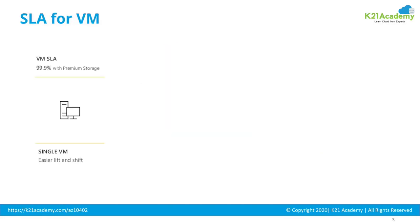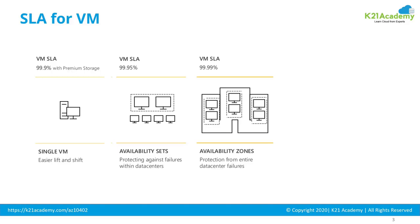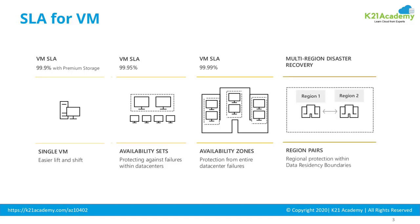From a service level agreement point of view for virtual machines: if you create a single virtual machine, you get only 99.9% uptime with premium storage. If you create two machines in an availability set — meaning they go within the same data center but in different fault domains — you get 99.95% SLA. If you create two machines across different availability zones, meaning across different data centers, you get 99.99% SLA. And if you want to protect your machines for disaster recovery, you can place them across regions, which is mainly for disaster recovery purposes.